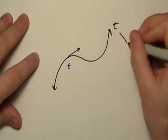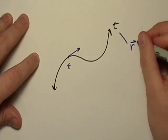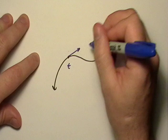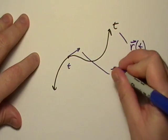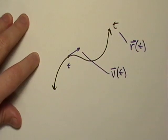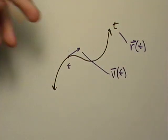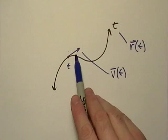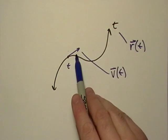Obviously, this is going to be represented by r of t, and this vector here is going to be represented by its forward velocity. Now, recall that if this vector right here is one unit in length, then it's a unit vector.